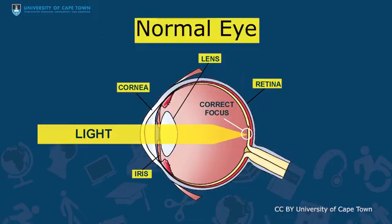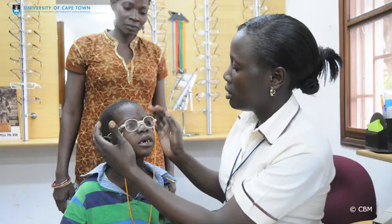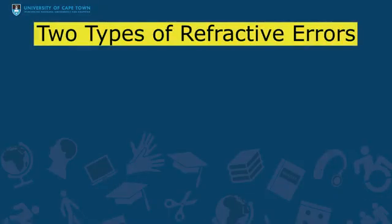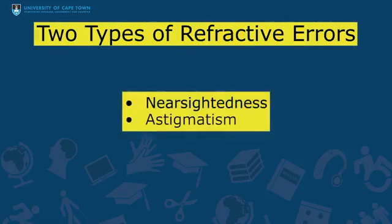The inner lining of the eye is called the retina, and it is from here that what we see is collected and then sent via the nerve to the brain to be interpreted as vision. Refractive problems are very common and fortunately very easy to correct with glasses. The two types of refractive errors that will have the greatest effect on a child's vision are nearsightedness and astigmatism.